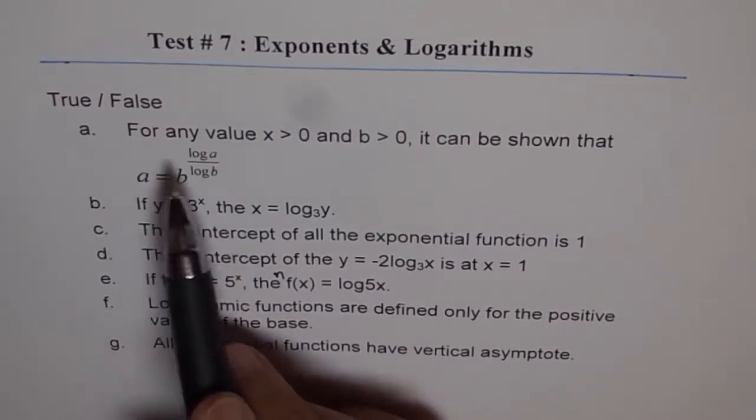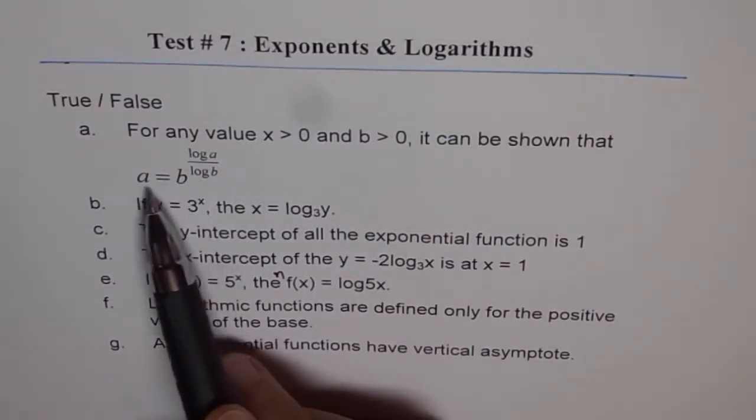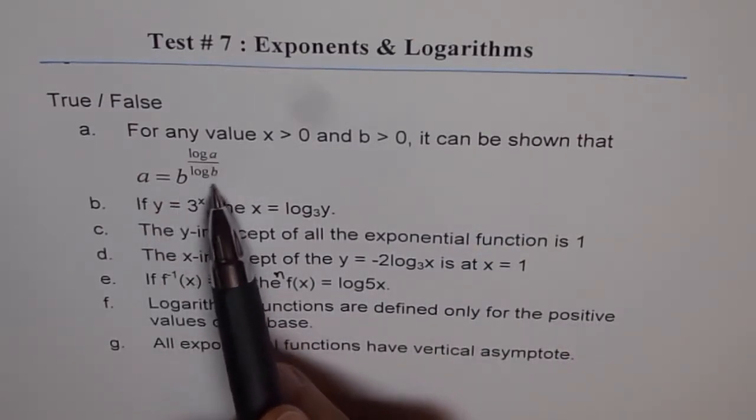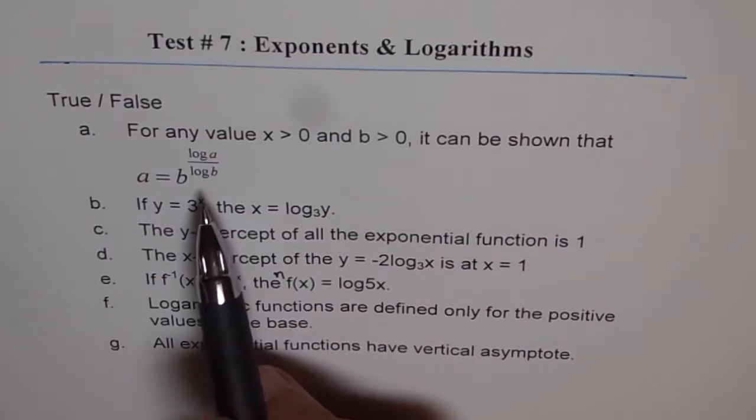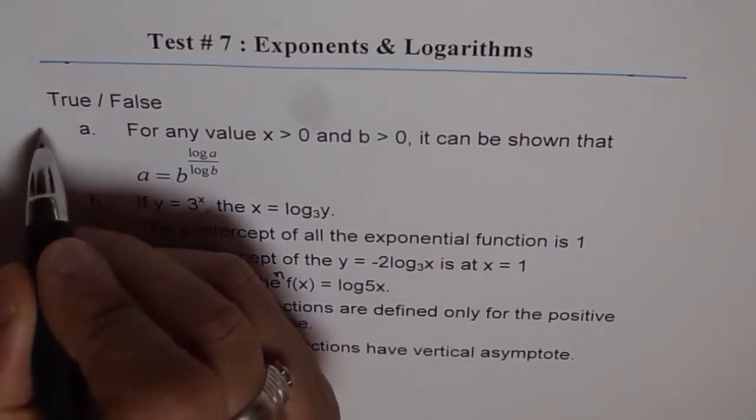Well, the first one is for any value of x greater than 0 and b greater than 0, they have to be positive, right? It can be shown that a equals b to the power of this, right? Yes, it can be shown, it is true, but I would like you to explain how, okay? So the answer for this is true.